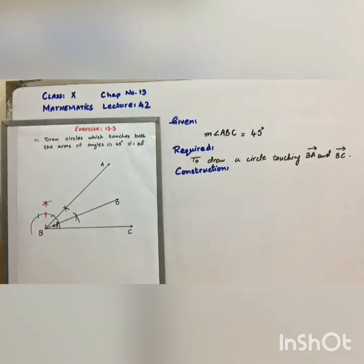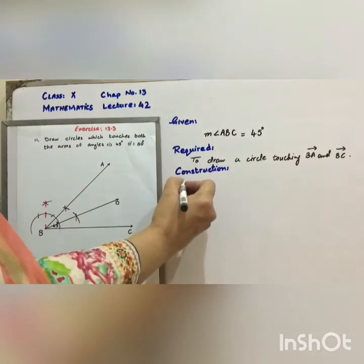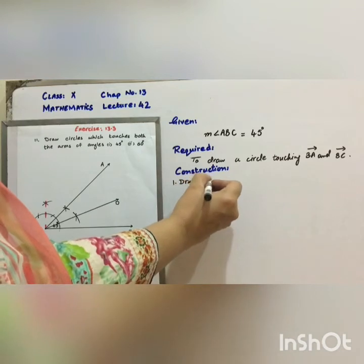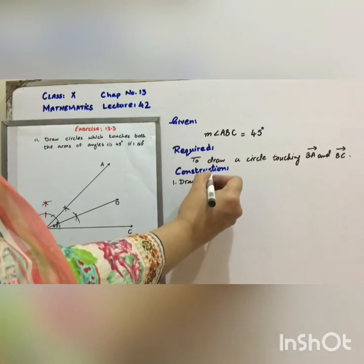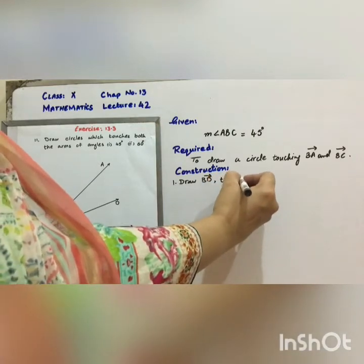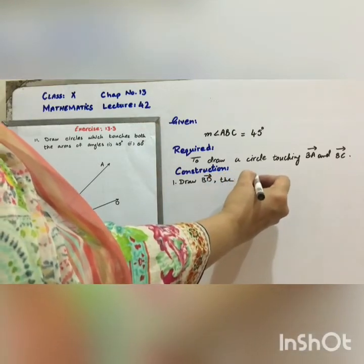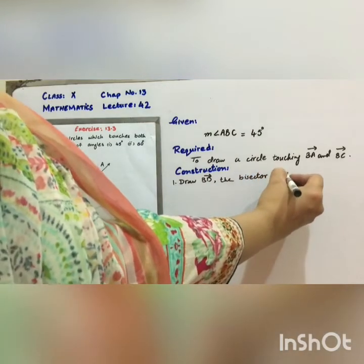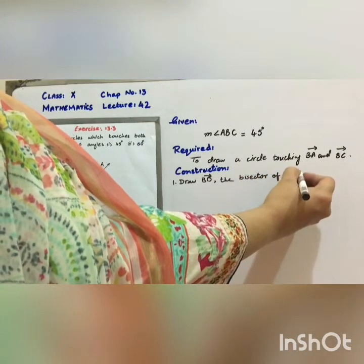Step number 1. Draw BD, ray BD, the bisector of angle ABC.